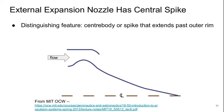The other option is what we call an external expansion nozzle. This is a very different-looking geometry which has a distinguishing feature of a very long center body or spike that goes down to zero radius and extends far past the outer rim of the nozzle. We have the contraction and then area expansion, and then the outer region stops but the inner region keeps going all the way down to zero radius.